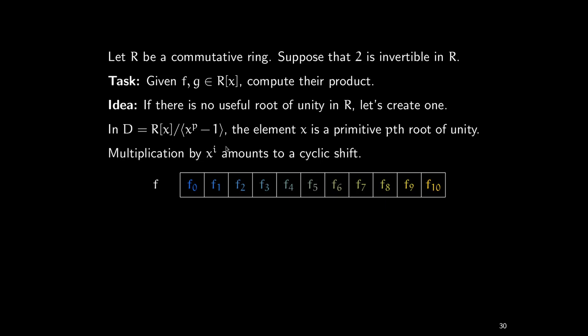Let's see what the cost of a DFT is when the ground ring is D. For the DFT we have to multiply things by powers of roots of unity. The question is: what is the cost of multiplying a polynomial by x^i? A polynomial is just a list of coefficients, and multiplying by x^i just shifts the list of coefficients. This doesn't involve any arithmetic operations — no additions or multiplications of coefficients — so the multiplication of a polynomial by x^i is free.